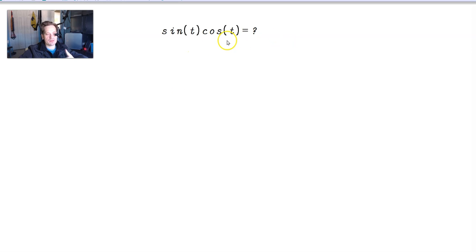Welcome, friends. Let's do a proof of sine of t cosine t. It's equal to something. The question is, what is it equal to? We can use complex exponentials to find an equivalent expression. That's a nice approach.